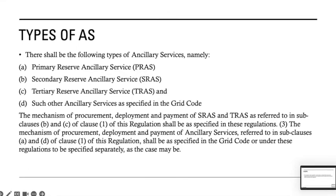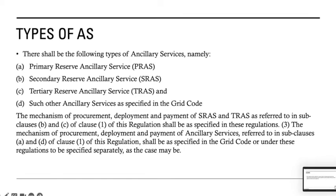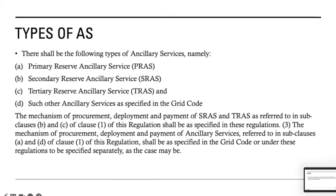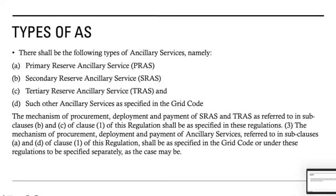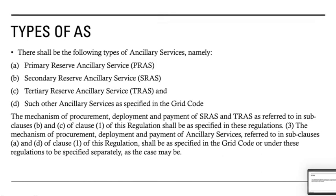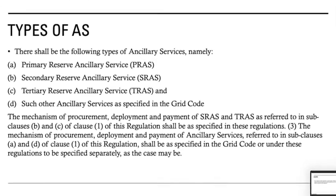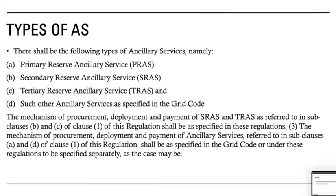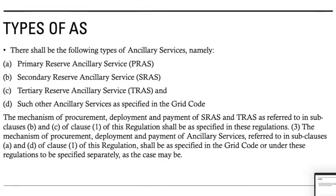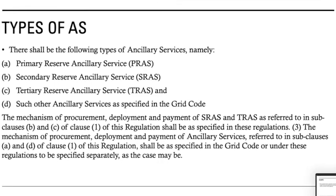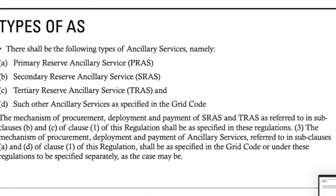What are the ancillary services? Basically we have three to four categories. The first is the Primary Reserve Ancillary Services, that is RGMO. The second is the Secondary Reserve Ancillary Services, that is AGC. The third is the Tertiary Reserve, which has just been introduced. And the fourth is any such regulatory ancillary services as may be specified in the grid code.